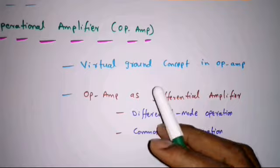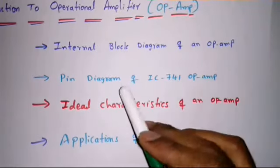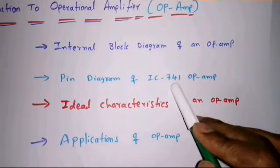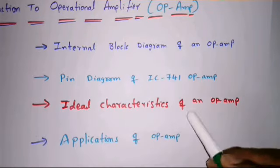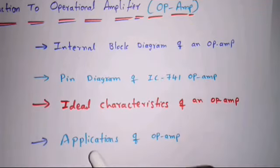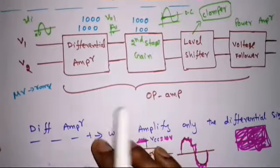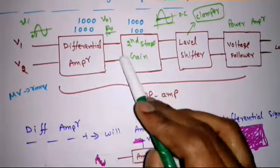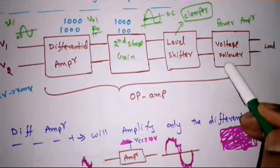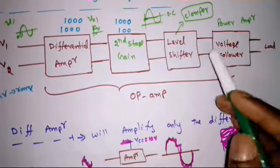In the previous lecture we discussed the internal block diagram of the operational amplifier. We saw four stages: the differential amplifier, the second stage gain, the level shifter, and the voltage follower. I explained all these blocks and what they are doing.